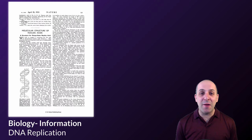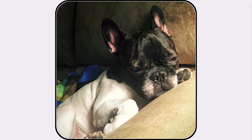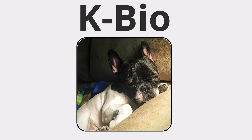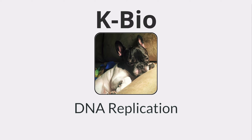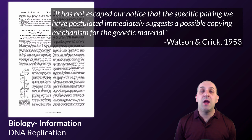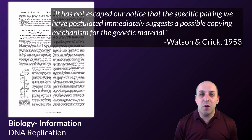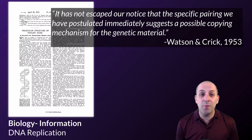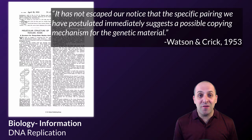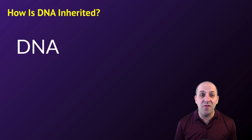Hi, and welcome to our video on DNA replication. In their 1953 paper, in which they described the double helix model of DNA structure, Watson and Crick were already aware that the structure of the molecule really helped to explain how it was copied from generation to generation. And it's that process, which we call replication, that we're going to talk about in this video.